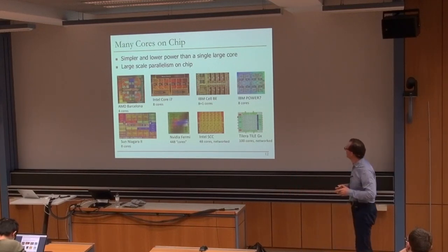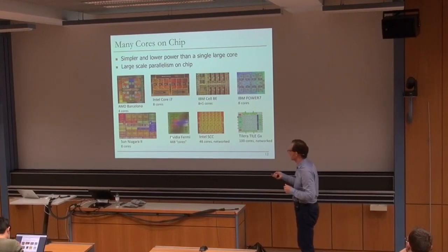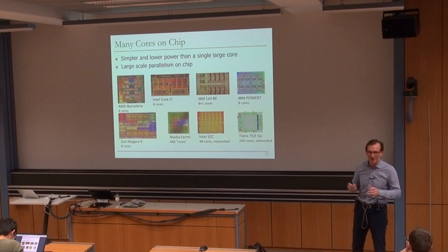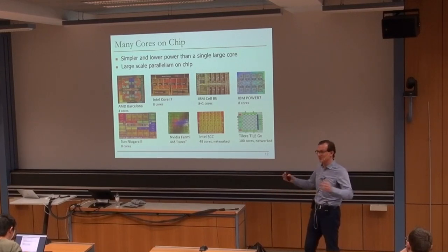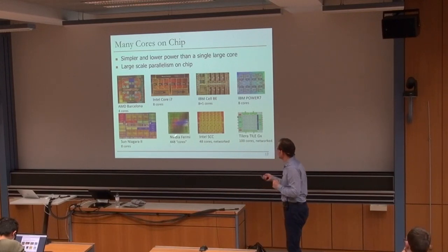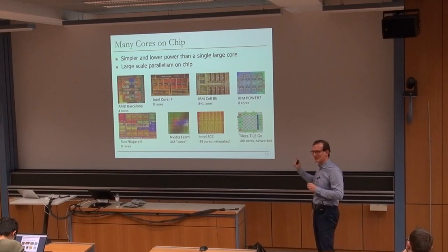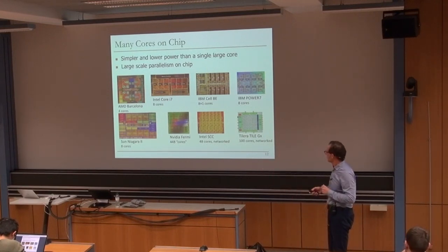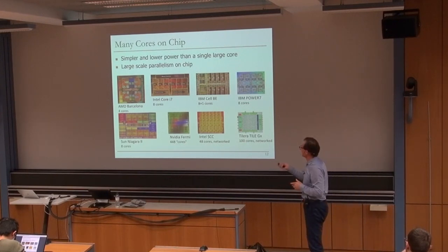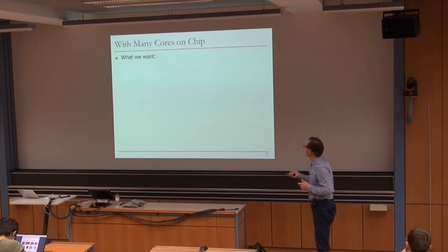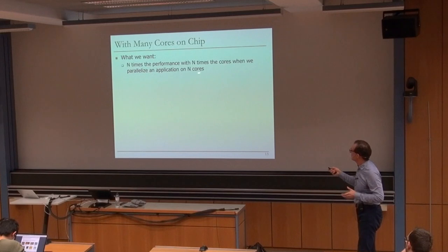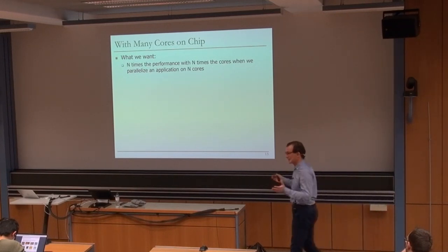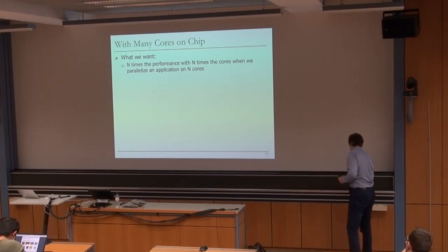Multi-cores enable large-scale parallelism on chip. These examples are relatively old - this has eight cores, this has six cores, but new generations have even more. GPUs have a lot more cores, although the definition of a core is sometimes very blurry. A core is something that should be able to execute a single independent thread. If you have many cores on chip, ideally you would like N times the performance of an application if you have N times the cores - that's scalable performance.